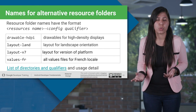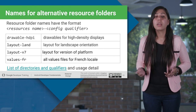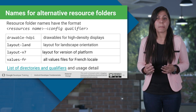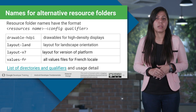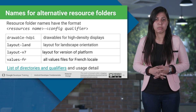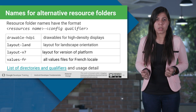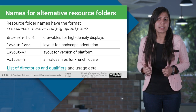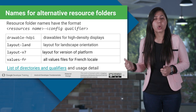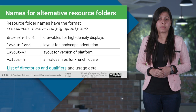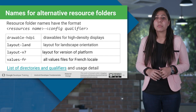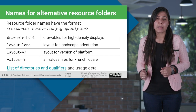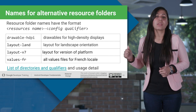How do we name these alternative resource folders? We have a combination of the resource name and a config qualifier. For example, to create alternative resources for drawables designed for high density displays, we name it drawable-hdpi. Another example: for setting up the French locale, we create a folder named values-fr.